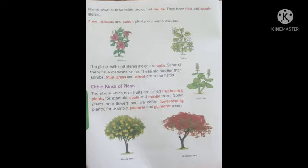Small plants: plants smaller than trees are called shrubs. They have thin and woody stems. Rose, hibiscus, and cotton plants are some shrubs. Jo pode darakht se chhote hote hain un ko hum shrubs kehte hain. Shrubs ka jo stem hota hai woh thin yaani patla hota hai aur woody yaani lakdi jaisa hota hai.